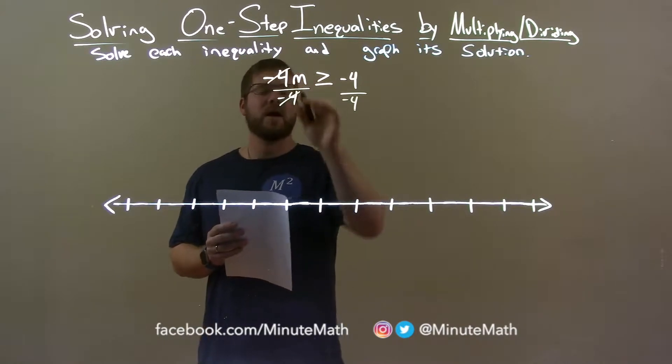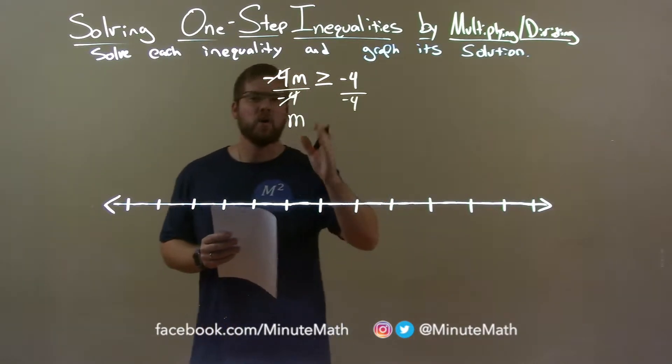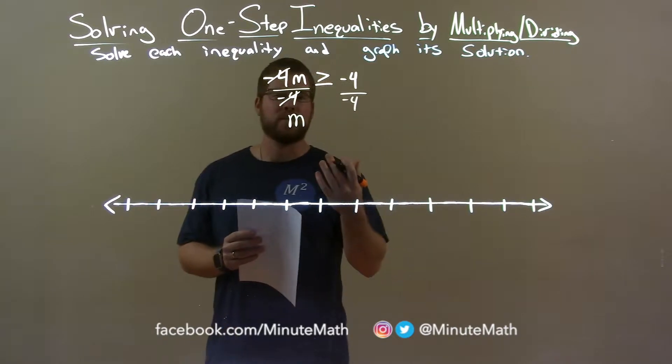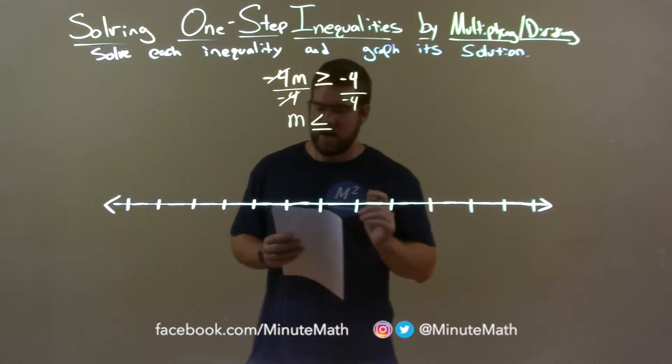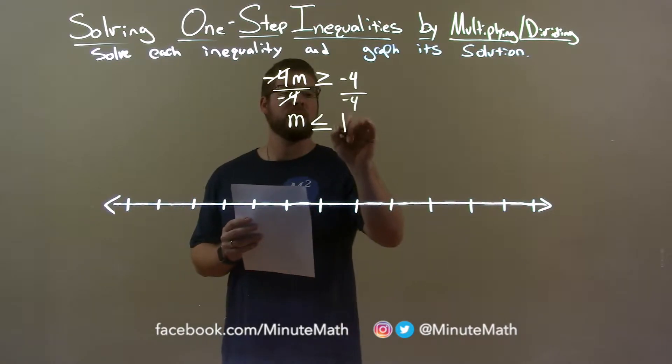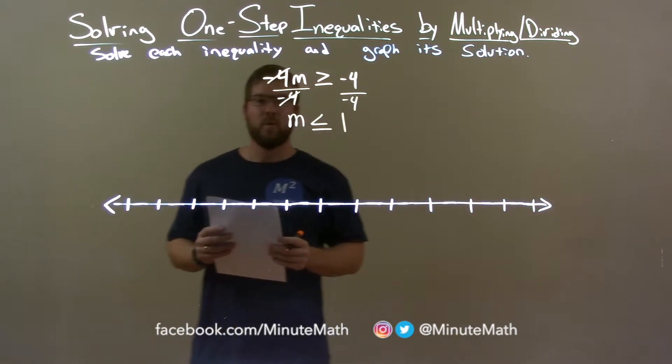m is now by itself and it's positive, but when we divide over an inequality, the sign flips. So m is now less than or equal to, and negative 4 divided by negative 4 is a positive 1. So we have m is less than or equal to 1.